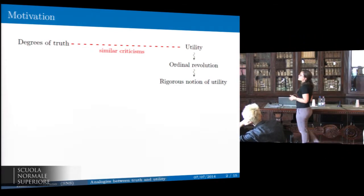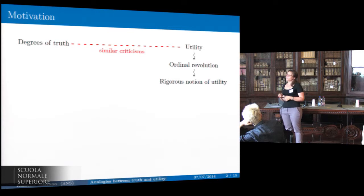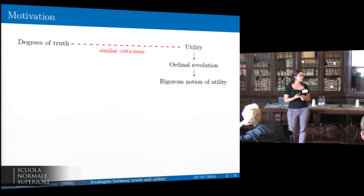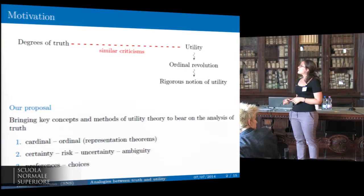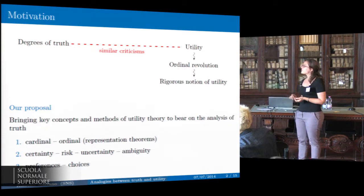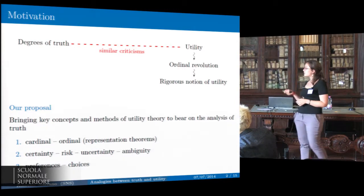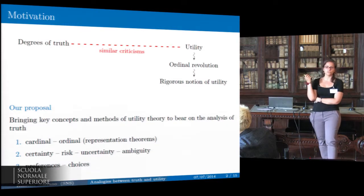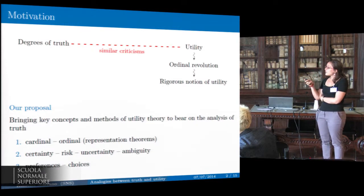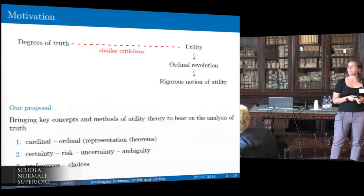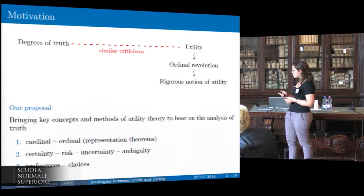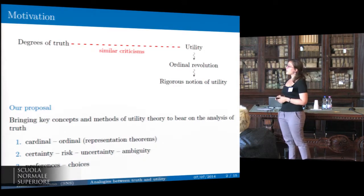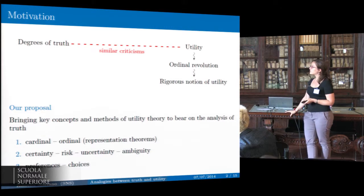So the idea is: can we use the same concepts or methods in the case of degrees of truth, since we started with criticisms which are very similar? Those criticisms mainly concern measurability and interpretability issues. Our proposal is to bring in key concepts and methods of utility theory to bear on the analysis of truth.